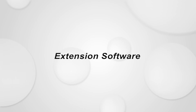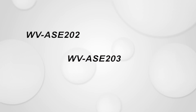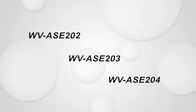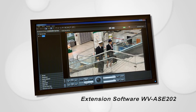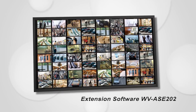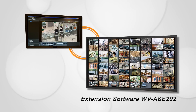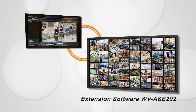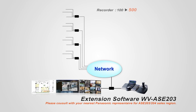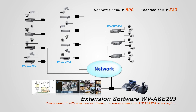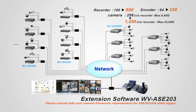WVASM200 can be combined with extension software WVASE202, WVASE203, and WVASE204 in addition to WVASE201 as options for extended functionality. WVASE202 is a dedicated extension software capable of displaying pictures of 64 cameras in one monitor, effective for integrated monitoring of many cameras on a big screen. With the addition of WVASE203, connectable recorders can be increased to 500 units at maximum. Also, encoders can be increased to 320 units at maximum, making possible integrated control and operation of large-scale systems, including conventional analog cameras.